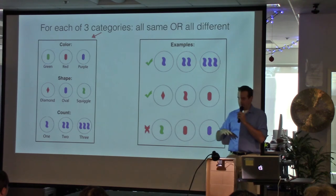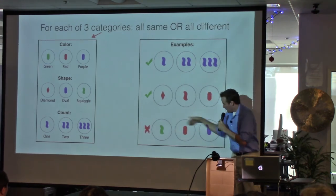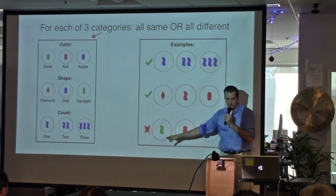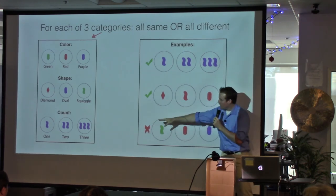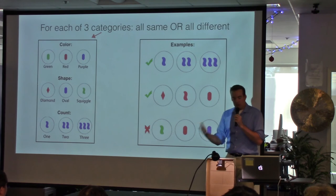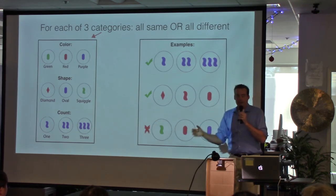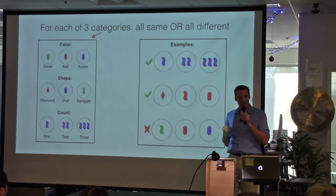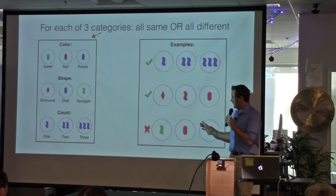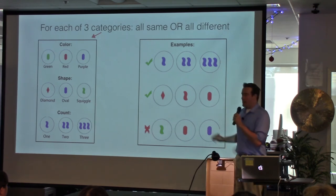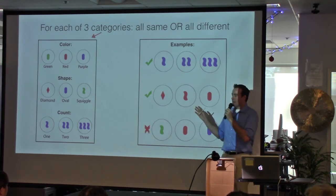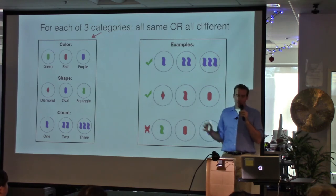This is a set because for color they're all the same, for shape they're all different, and for count they're all the same — so you've got this all-or-nothing kind of thing. This is not a set: for color they're all different — that's good — but for shape, you've got two of one and one of the other, so this fails the shape criterion. That's the whole game. When you see a set you say 'set,' your colleagues grunt with dismay, you get to keep the cards. Whoever has the most sets wins. I'm actually very bad at this game.